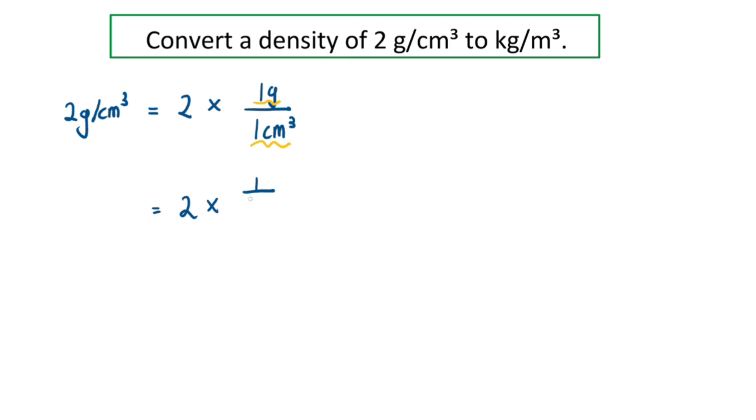So 1 gram is actually 1/1000 kg. To convert 1 cm³ to m³, to avoid any errors, let's rewrite the 1 cm³ as 1 cm × 1 cm × 1 cm. Then next, we are going to individually convert each of the 1 cm to meters.